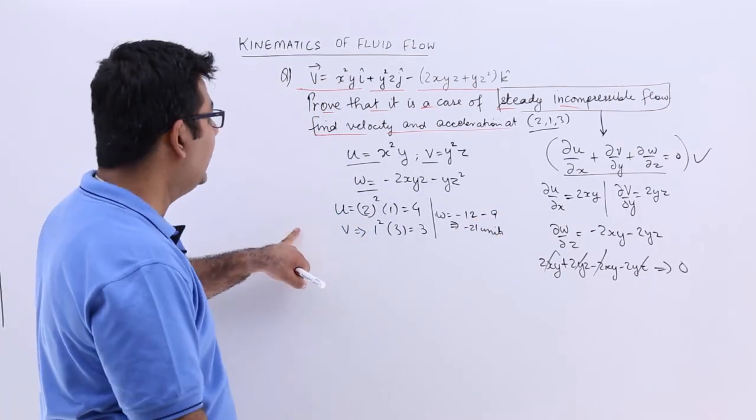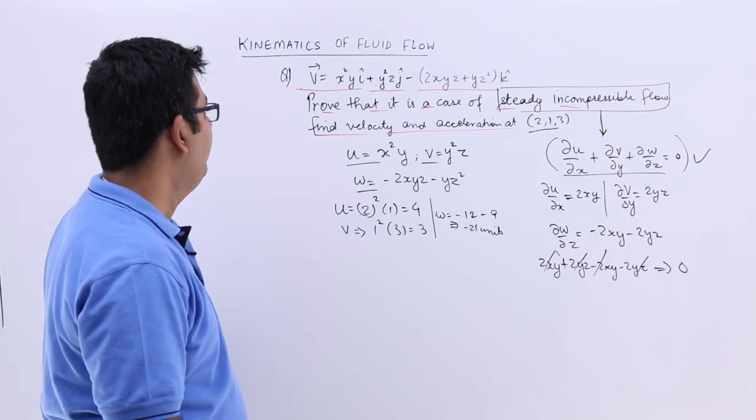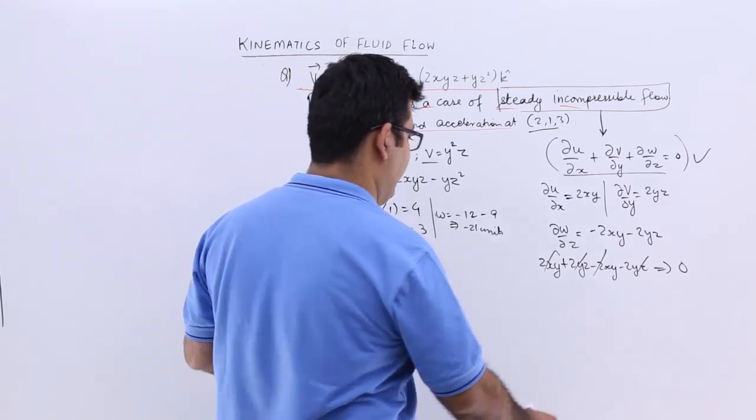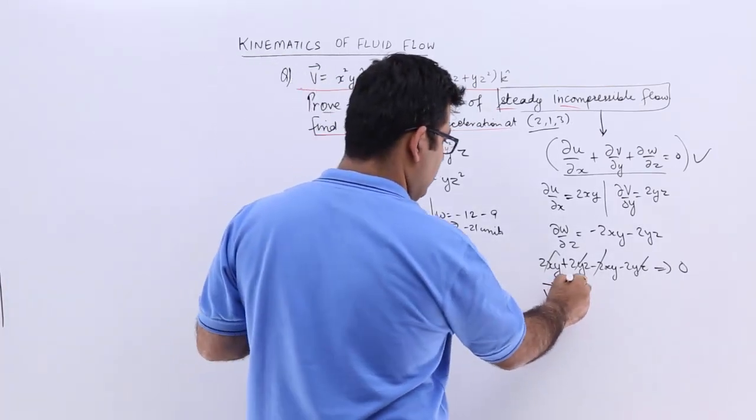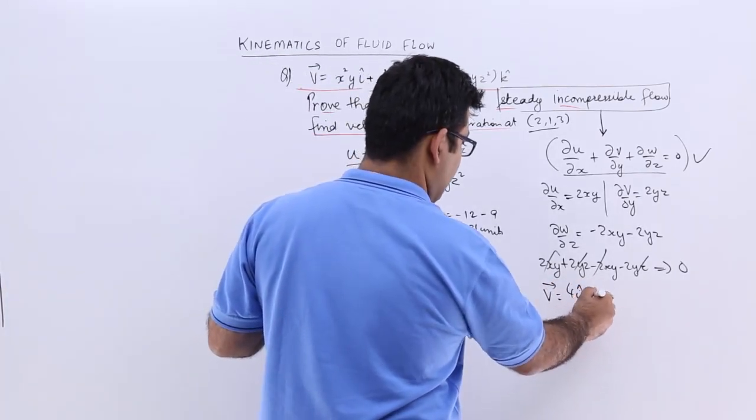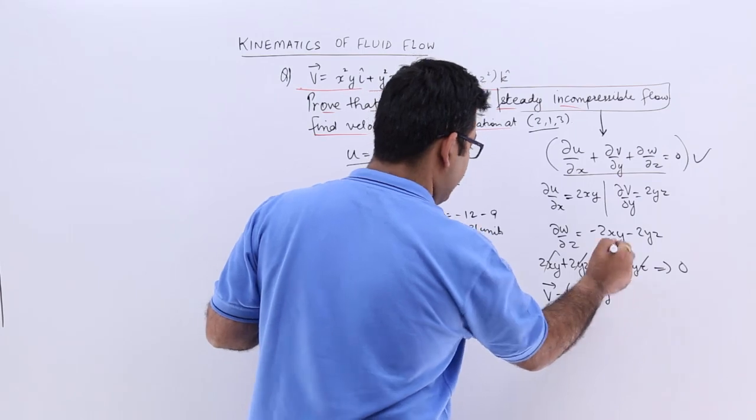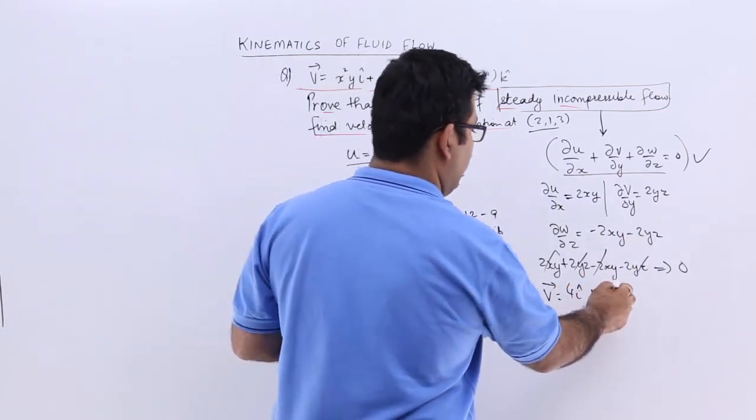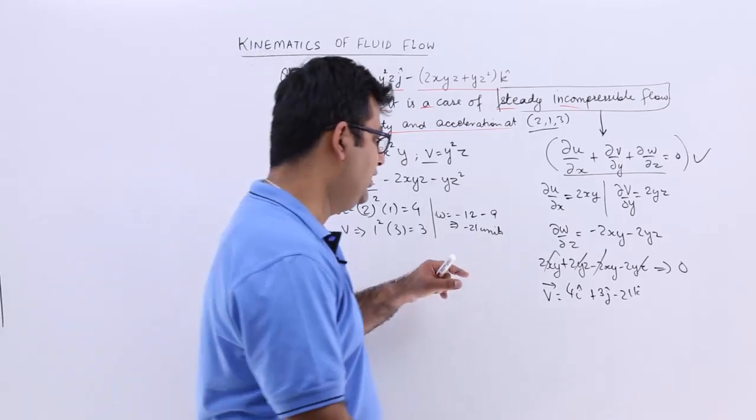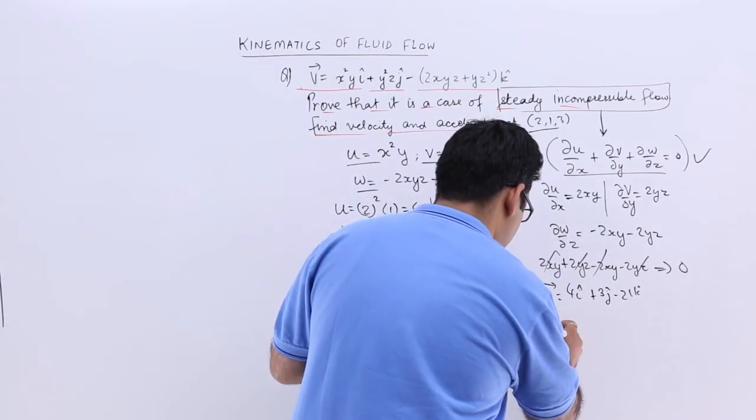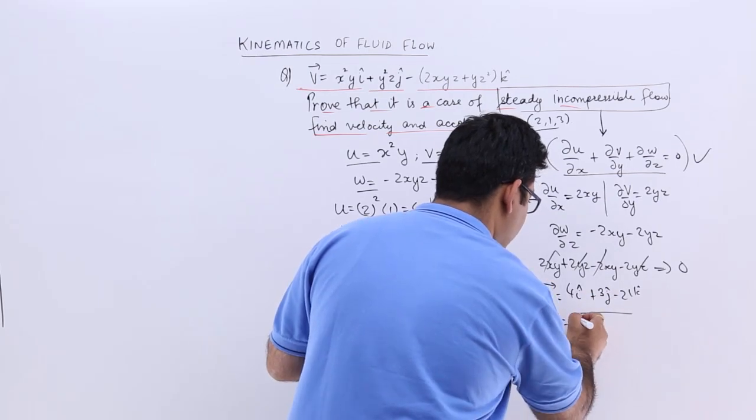So with this I can rewrite the velocity vector which is V = 4i cap + 3j cap - 21k cap. So the velocity magnitude would be square root of 4² + 3² + 21².